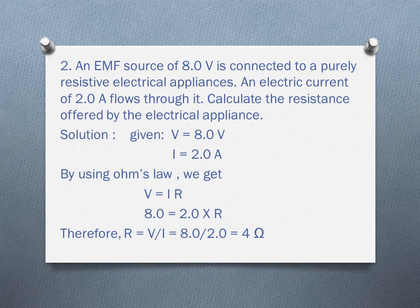Problem 2: An EMF source of 8.0 volts is connected to a purely resistive electrical appliance. An electric current of 2.0 Amperes flows through it. Calculate the resistance offered by the electric appliance. Given is the voltage, 8.0 volts, and a current of 2.0 Amperes. We can find the resistance by using Ohm's law. Ohm's law states that V equals IR. From this formula, we can find R, that is R equals V by I. Substituting the values, we get 8.0 divided by 2.0, which equals 4 Ω. The resistance offered by the electrical appliance is 4 Ω.